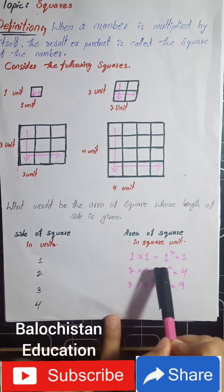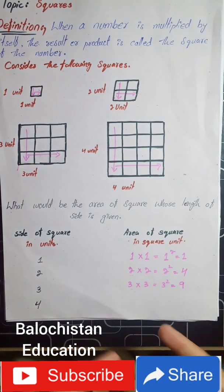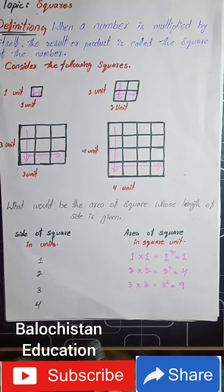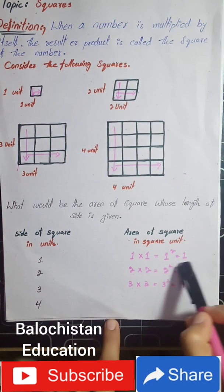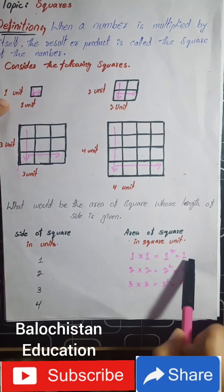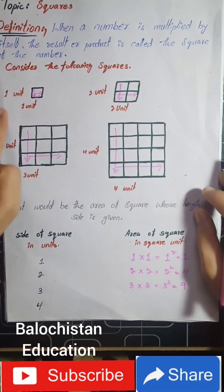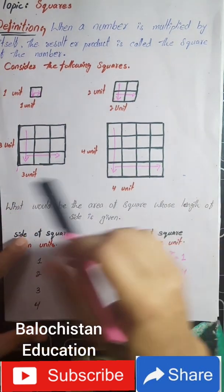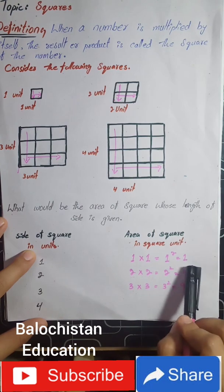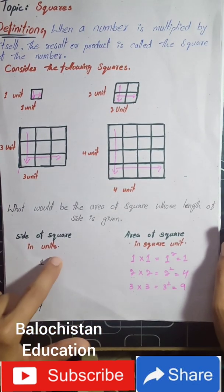To find the square of any number, we multiply the same number by itself — only once. For one unit: one multiplied by one equals one. No matter how many times you multiply one by itself, the answer is always one. So the square of one is one. As you can see in the picture, one unit from top to bottom and one unit from left to right gives just one box.